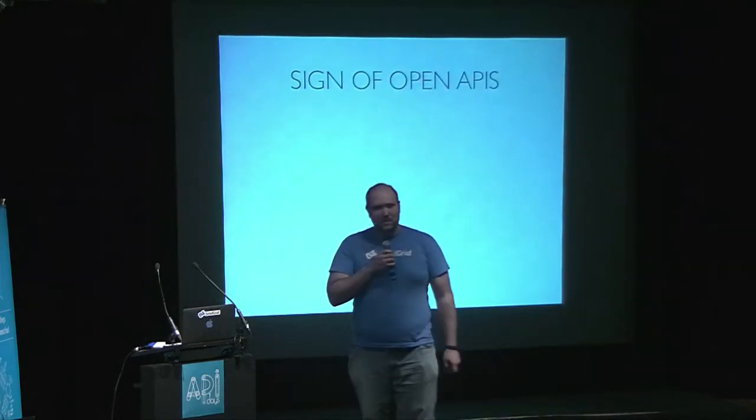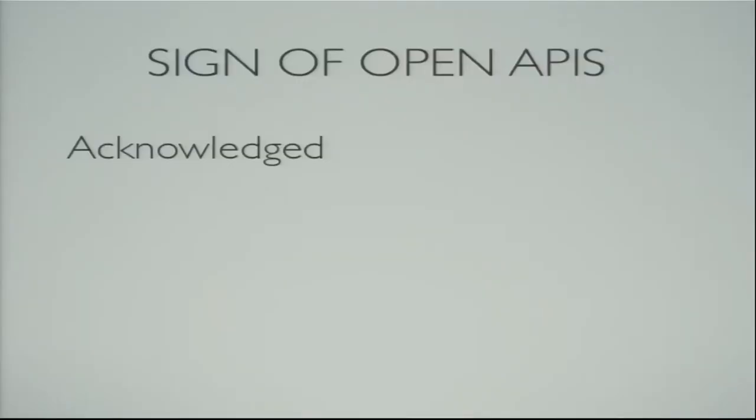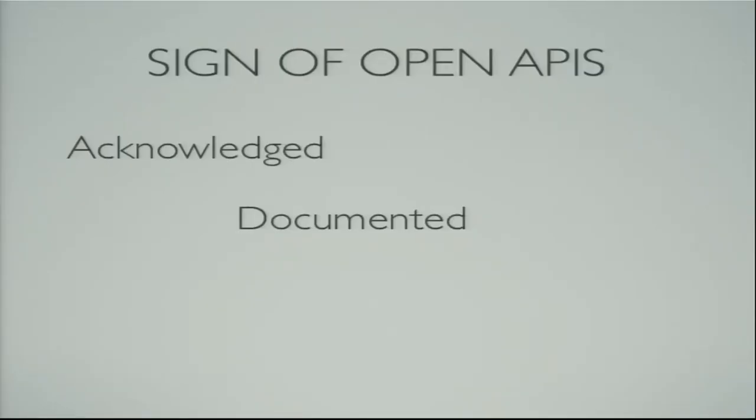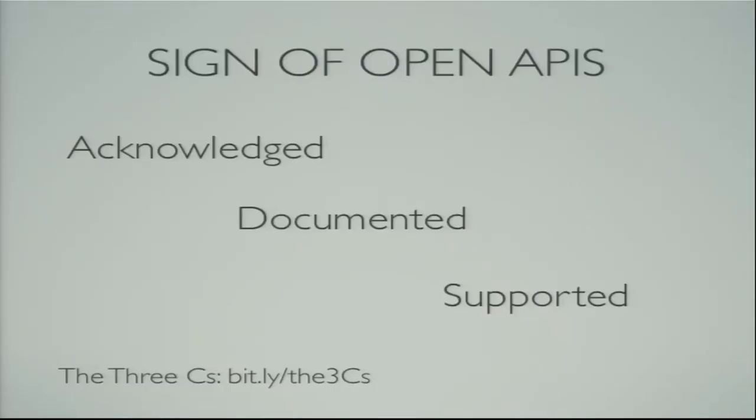Here are a few signs of openness. Open APIs are first of all acknowledged — a pretty low barrier, but if you're going to have an API, you want to tell people it exists. Second, it's documented — you show them how to use it. And third, it's supported — someone actually responds to developer questions. One out of three is certainly a start; all three is preferable. I have a whole talk on what I call the three Cs of a developer portal covering what's important if you have a public API program.